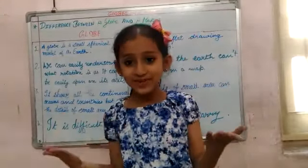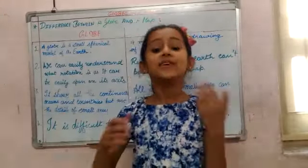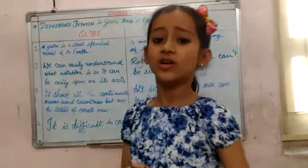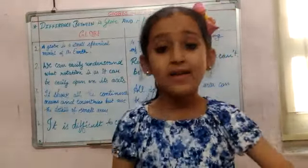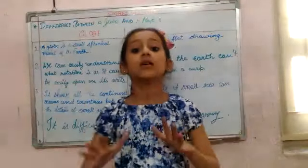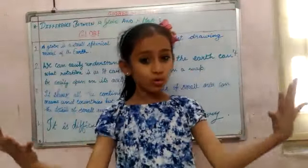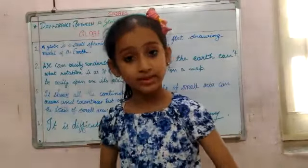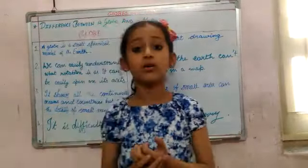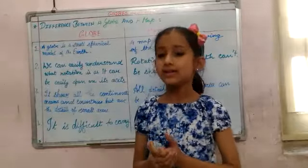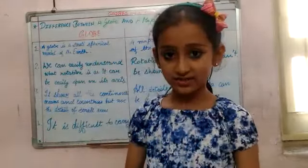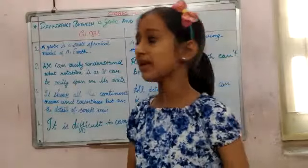Hi guys, this is my new video and today we are going to learn about globe and map. A globe is a small spherical model of the earth and it shows the whole world at the same time. A map is a flat drawing of the earth, a country, or any of the villages.